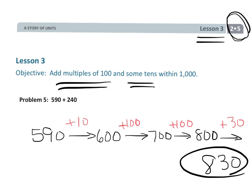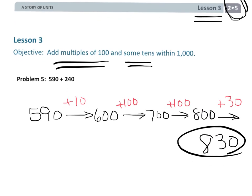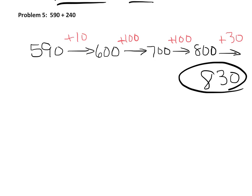So that's one way to model 590 plus 240 using the arrow method. This is not the only way that we could have used the arrow method for 590 plus 240. Here's another way. So let's start with 590. And in contrast with the way we started here, adding by 10 to get to the next milestone number, let's say a student doesn't want to do that. Well, she doesn't have to. She could say, well, I want to add 100.